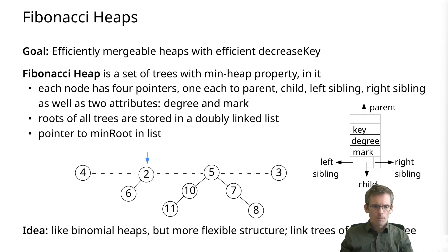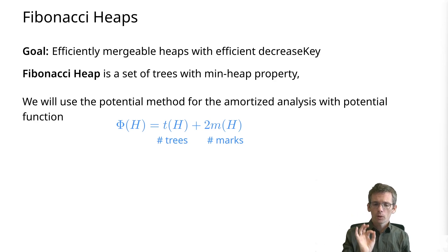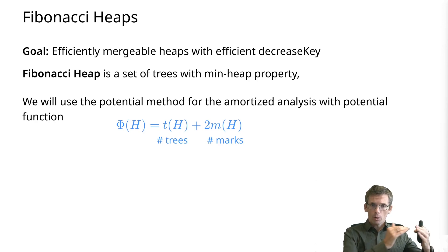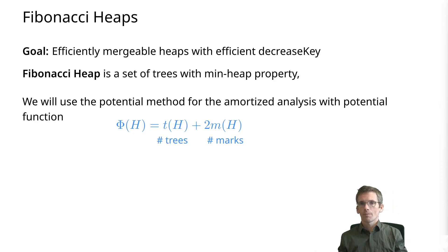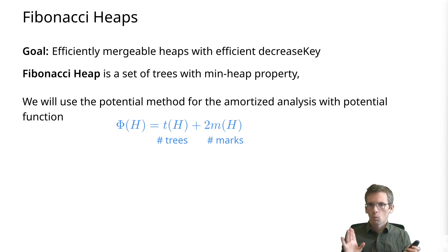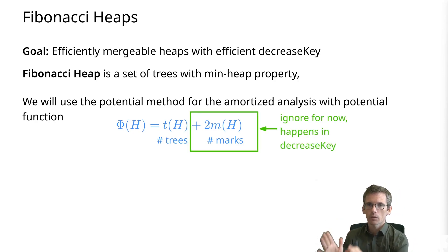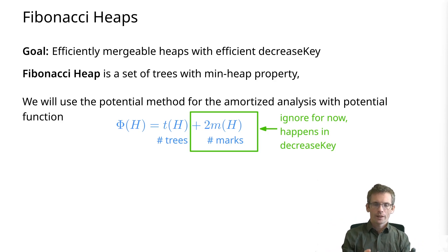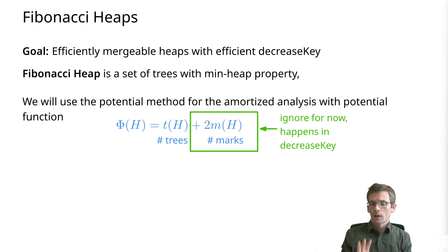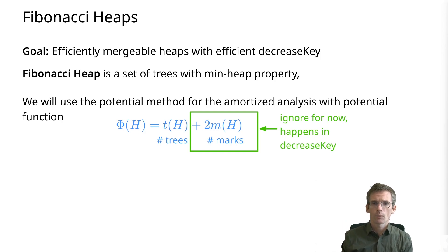Now about the setup. We will use for the analysis the potential method with the following potential: number of trees in my set plus two times the number of marks. Any node can be marked or not marked. What these marks are, I will say later when I talk about the decrease-key. For now, when we do the analysis, just ignore the marks. Initially, the marks are zero, so there are no marks.